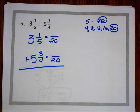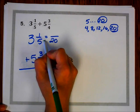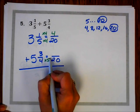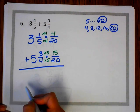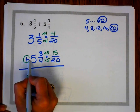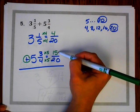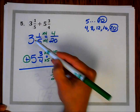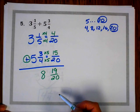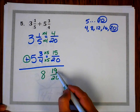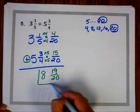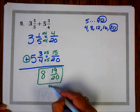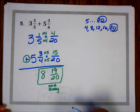Now it's time to write my equivalent fractions. 5 times 4 is 20, so 1 times 4 is 4. 4 times 5 is 20, so 3 times 5 is 15. Check your operation — it's addition, so I'm going to add: 4 twentieths plus 15 twentieths is 19 twentieths. I'm going to add my whole numbers: 3 plus 5 is 8. I see if I can simplify — 19 and 20 are 1 away, so my fraction is in simplest form. So 8 and 19 twentieths is my final answer.